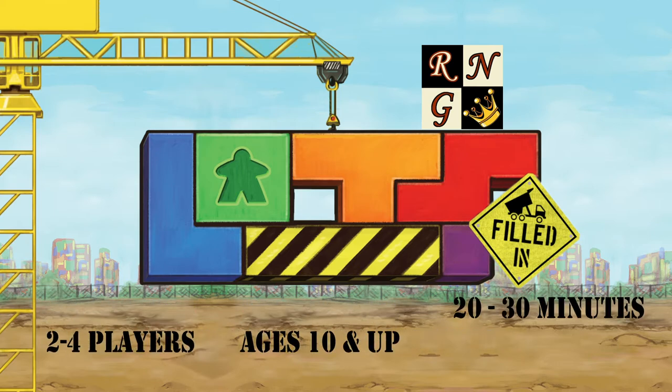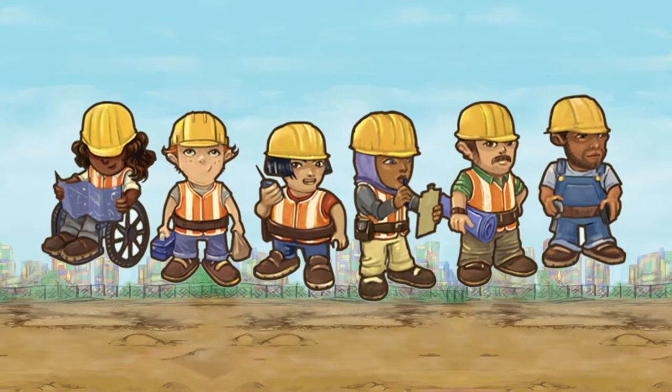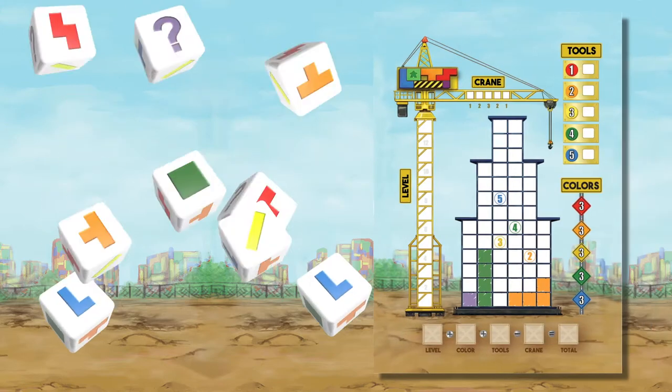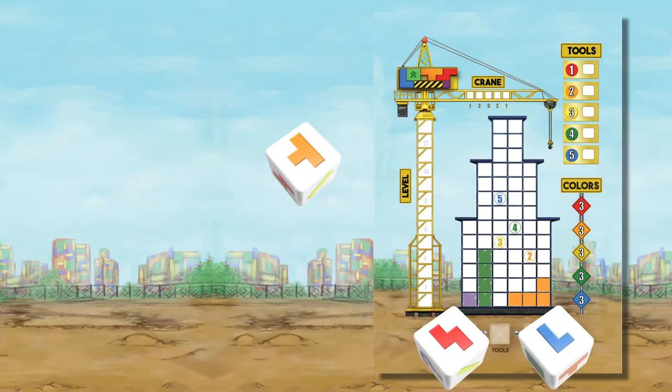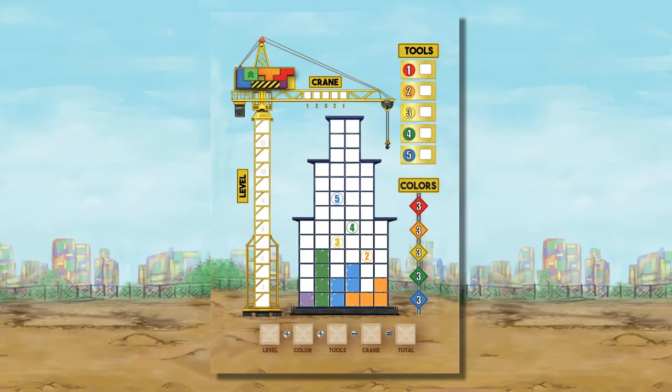The crew is back and this time you'll be building with colors and dice. Roll the dice, draw in tetrominos, and score high. You not only need to be crafty on how you place, but also what color you place. Get the most points by completing levels, getting to tools, and having the most in a color.